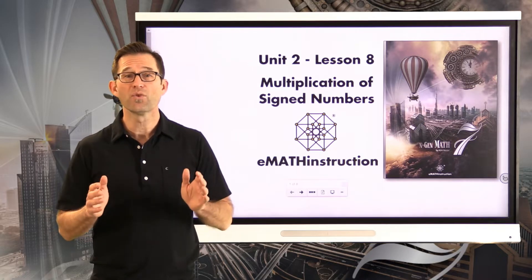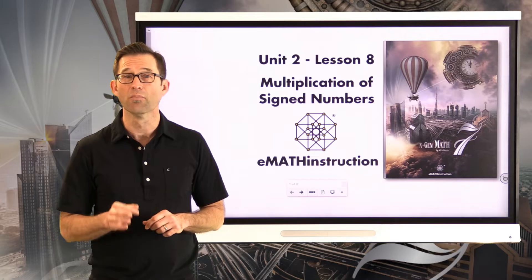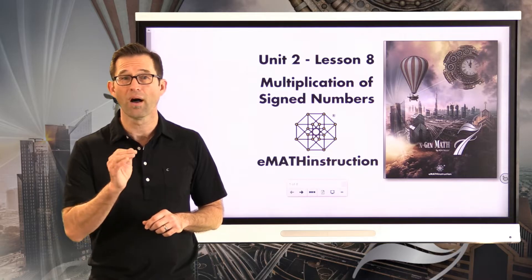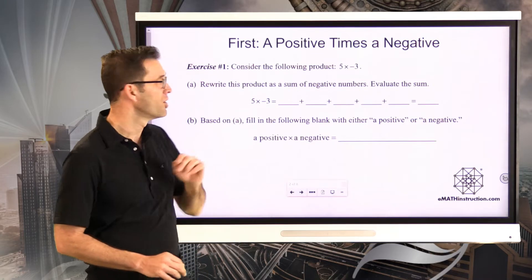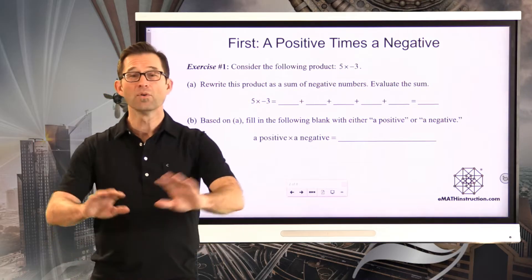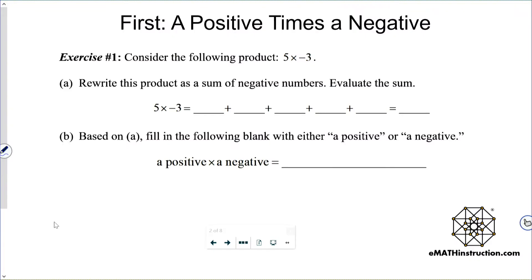Let's jump right into our first exercise where we look at what happens when you multiply a positive times a negative. Exercise number one: consider the following product, 5 times negative 3. Letter A asks us to rewrite this product as the sum of negative numbers and evaluate this sum.